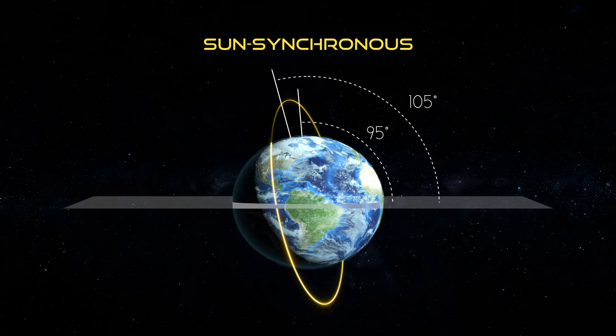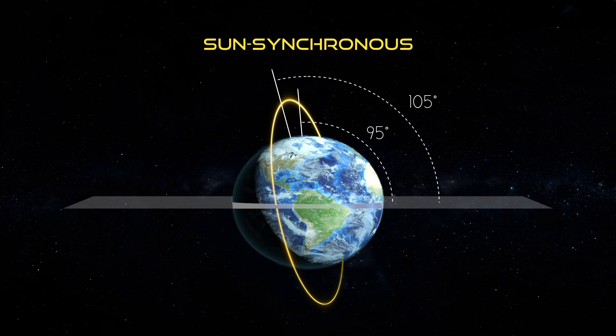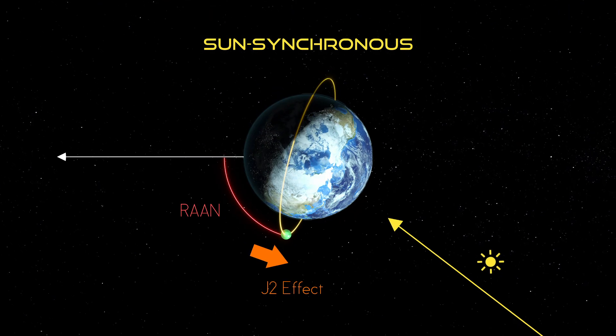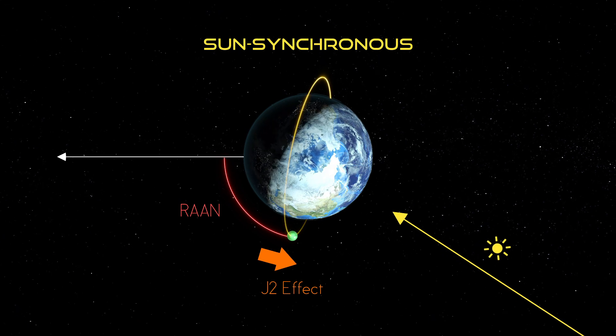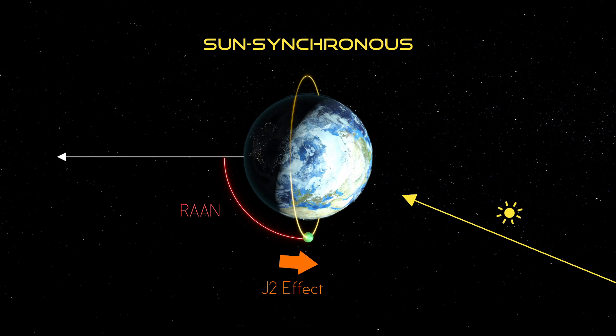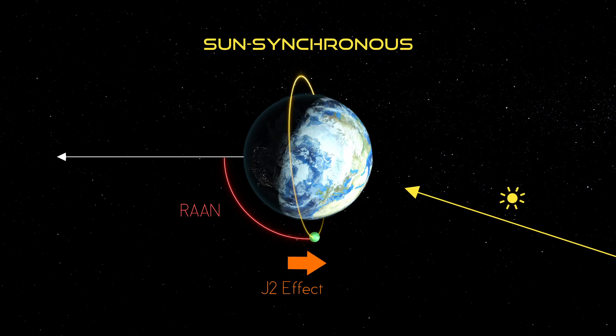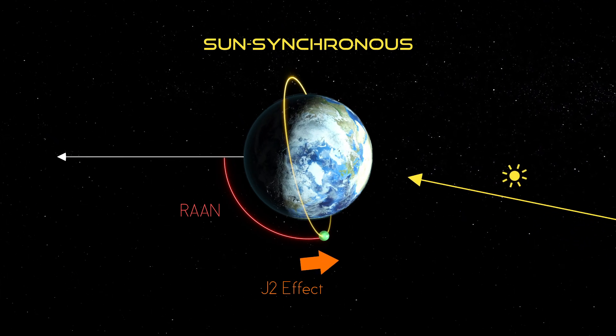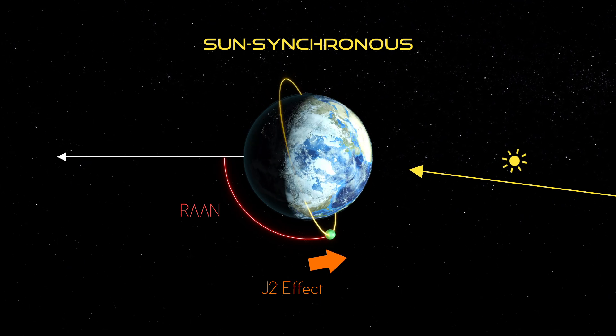An interesting effect happens for inclinations between 95 and 105 degrees. In this range, orbit designers choose combinations of altitude and inclination that cause RAAN to rotate eastward at exactly the same rate that the Earth rotates around the sun — thus, sun-synchronous. Satellites in these orbits pass over the Earth's equator every day at exactly the same local times, maintaining a consistent shadowing effect for imaging sensors looking down at the Earth's surface.